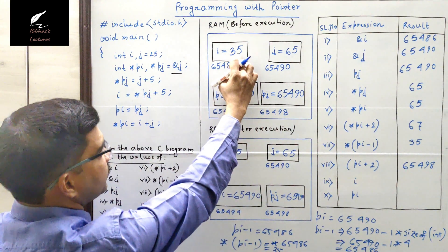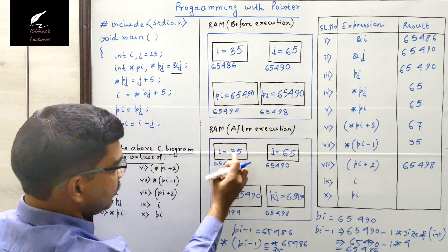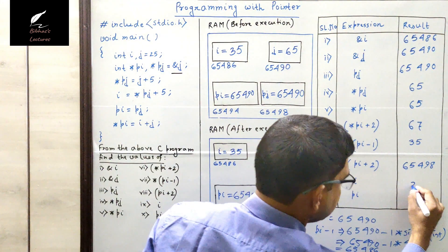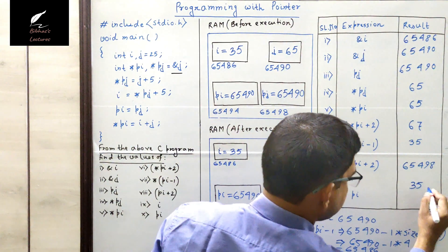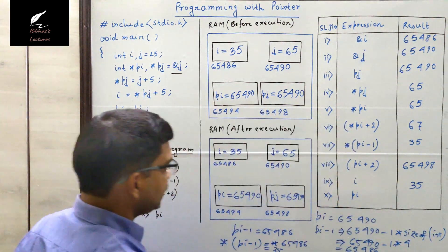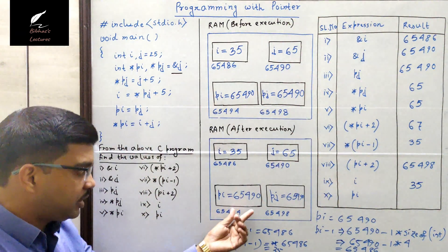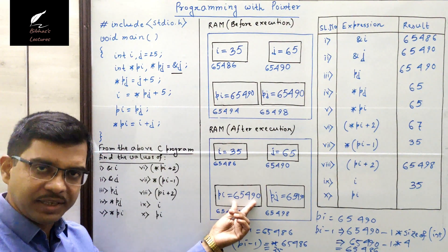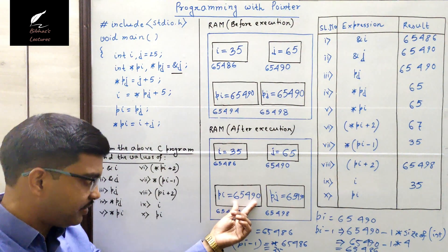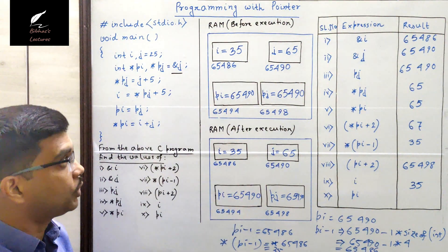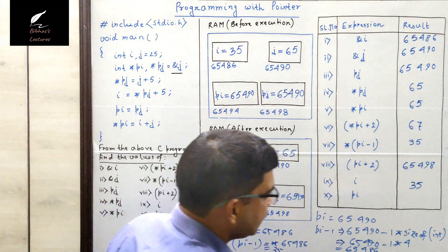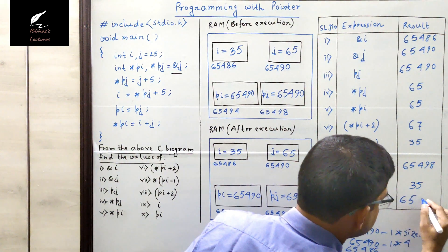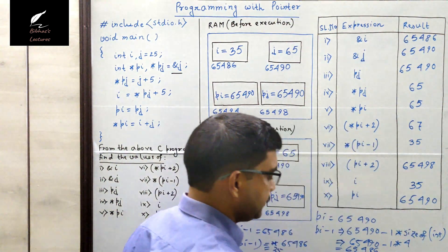Number nine is simply i. i is an integer variable and its value is 35. The last one is pi — pi is a pointer and its value is its stored address, which is 65490. So pi equals 65490.